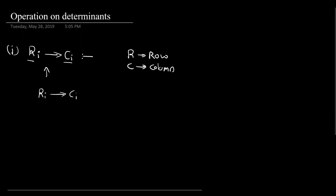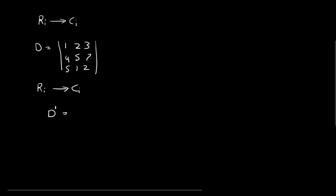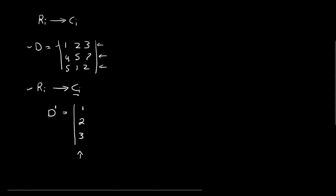Let us take an example. Let us take a determinant which has the values 1, 2, 3, 4, 5, 7, 5, 1, 2. Now, if I want to perform the operation ri to ci, then our new determinant d' will be converted as follows. We are going to convert our first row into the first column, so we will write the elements of the first row — 1, 2, and 3 — as our first column. Our second row has elements 4, 5, and 7, so we are going to write those in the second column of our new determinant.